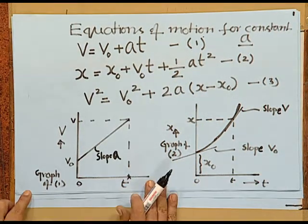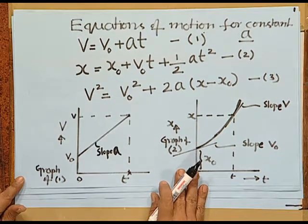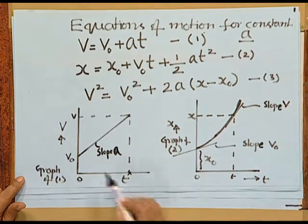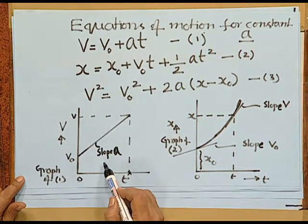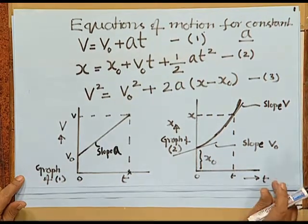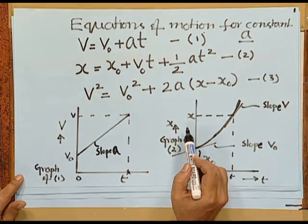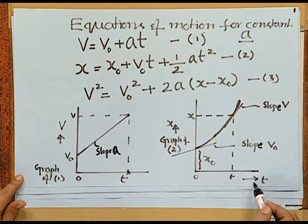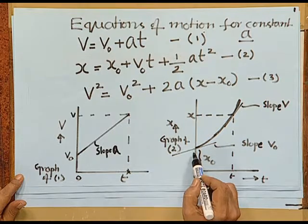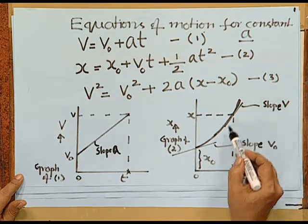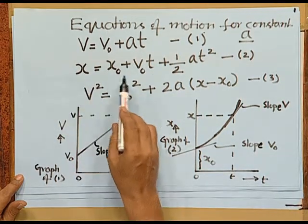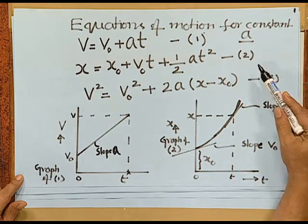Now look at these graphs which give you the representation of equations 1 and 2. The first graph, v versus t, has a slope that gives you the acceleration. Equation 2 is represented in graph 2, where position is plotted against time. The initial position at t = 0 is marked x₀, and the variation of position with time is a parabolic curve because x = x₀ + v₀t + ½at² is the equation of a parabola.